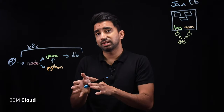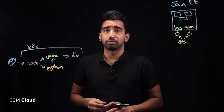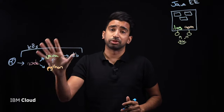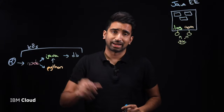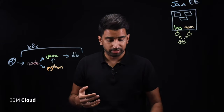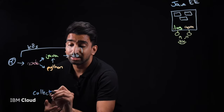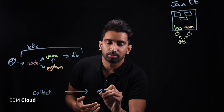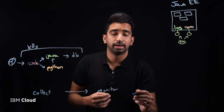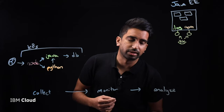Here's where observability comes in and actually differs itself from standard APM tools. It thinks about the more holistic cloud-native approach for being able to do things like logging and monitoring. There are three major steps for any sort of observability solution: first, collect, because we need to collect data; then monitor; and finally, analyze — doing something with the actual data that you have.